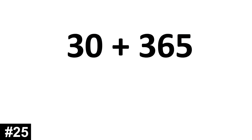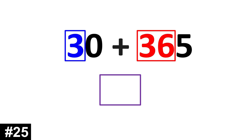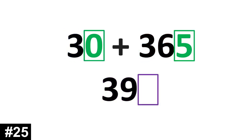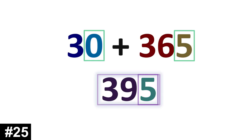And lastly, 30 plus 365. 30 has 3 tens. Add to 36 tens. And we get 39 tens. We add the ones. 0 and 5 gives us 5. So our answer is 395.